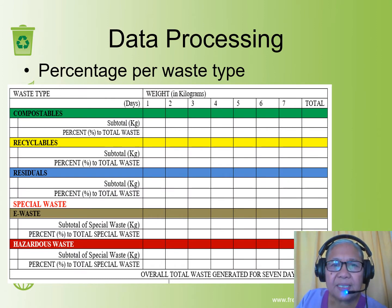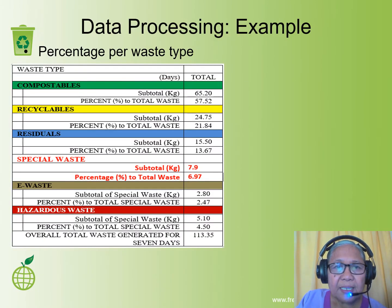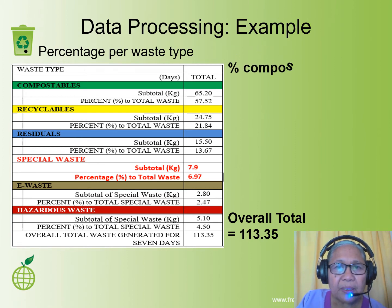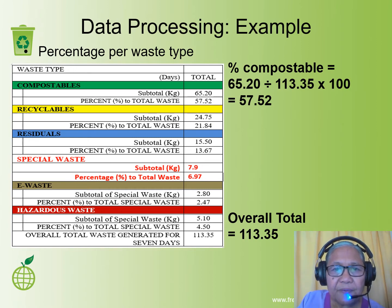Now, to get the percentage per waste type, you are going to divide the subtotal of that type by the overall total and multiply by 100. Let's take an example. You see here that the overall total is 113.35 kilograms. To get the percent compostable, you are going to divide the total of compostable — which is 65.20 — by 113.35, and then multiply it by 100. In our example, there is 57.52% of compostable or biodegradable waste.